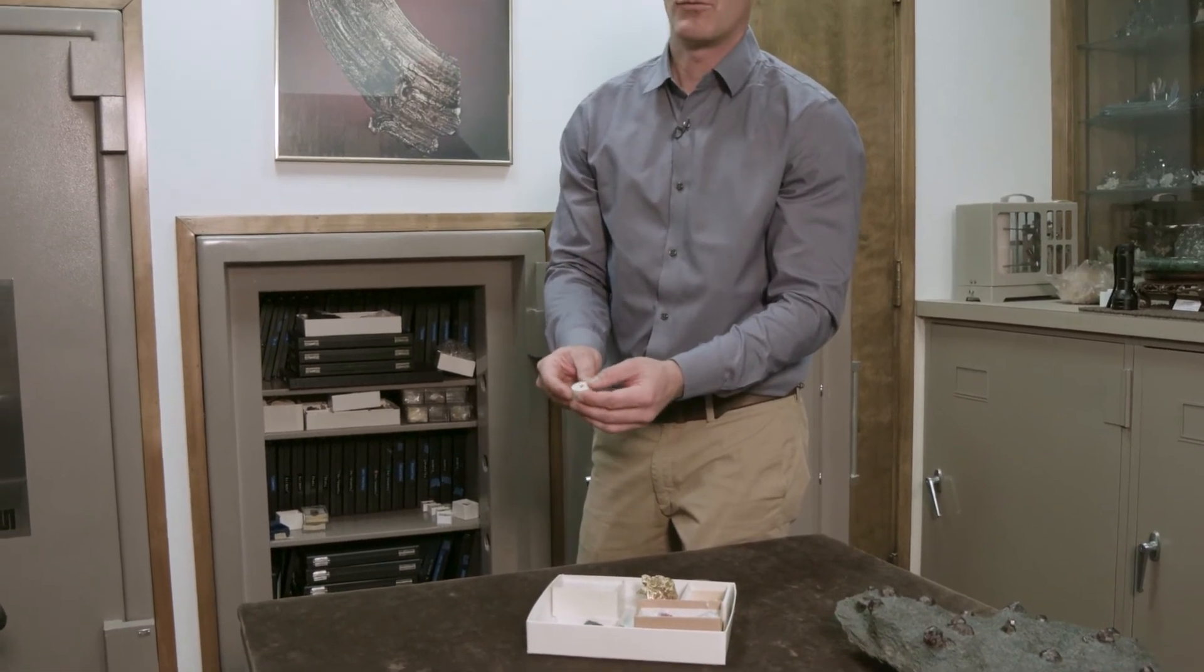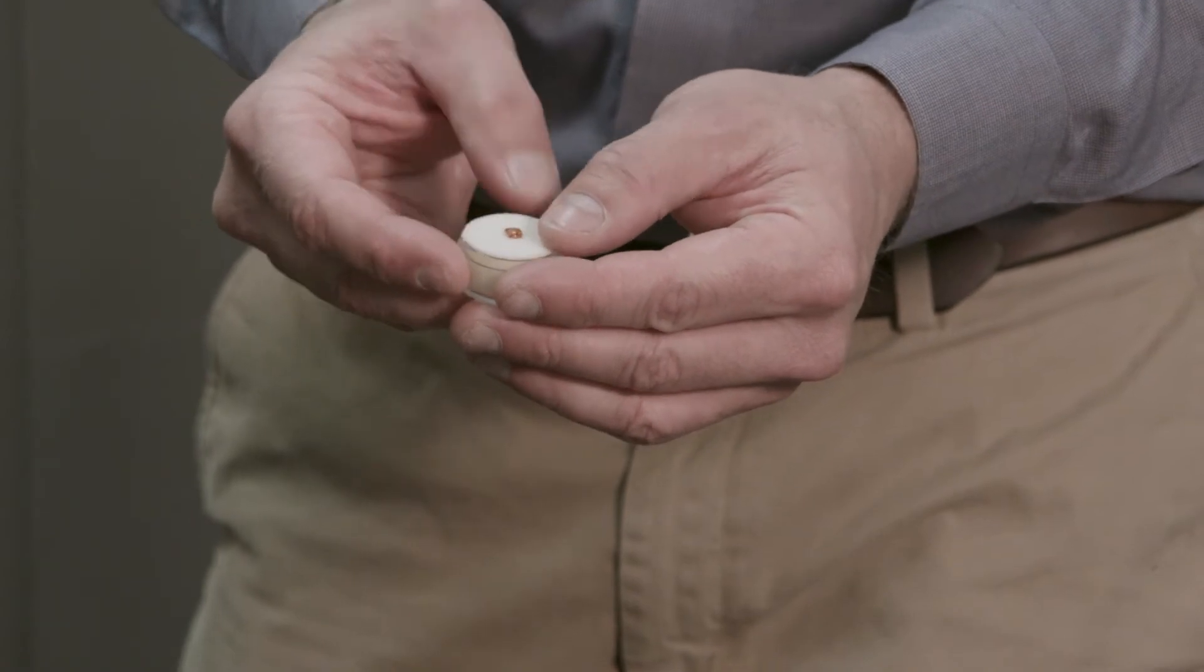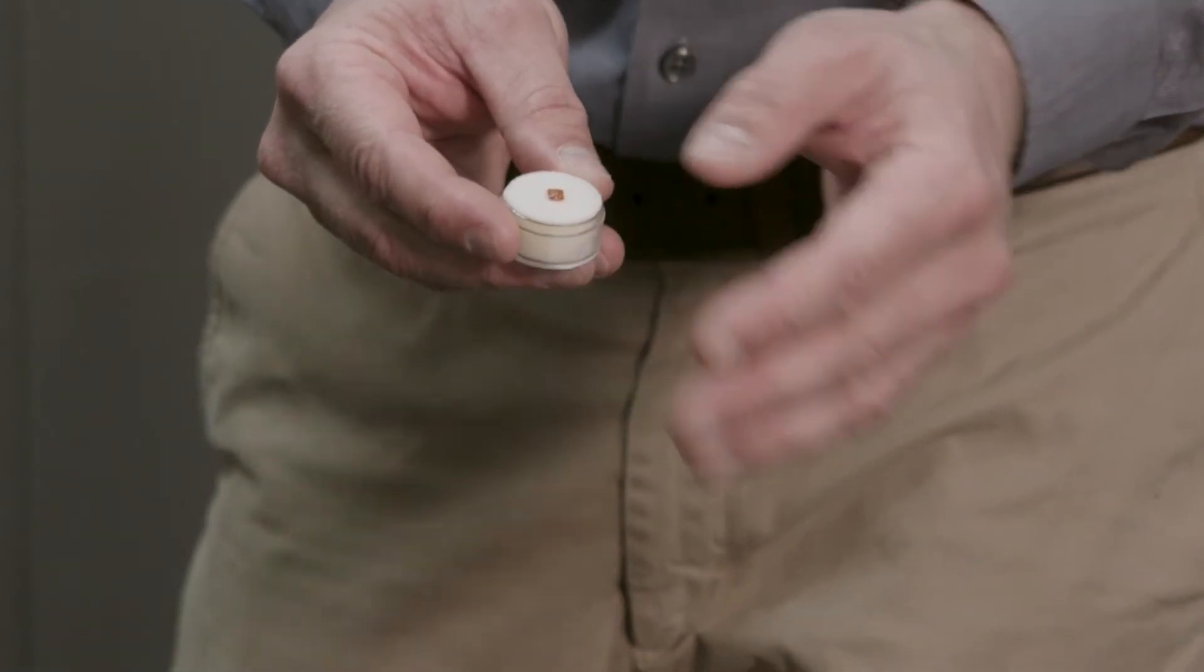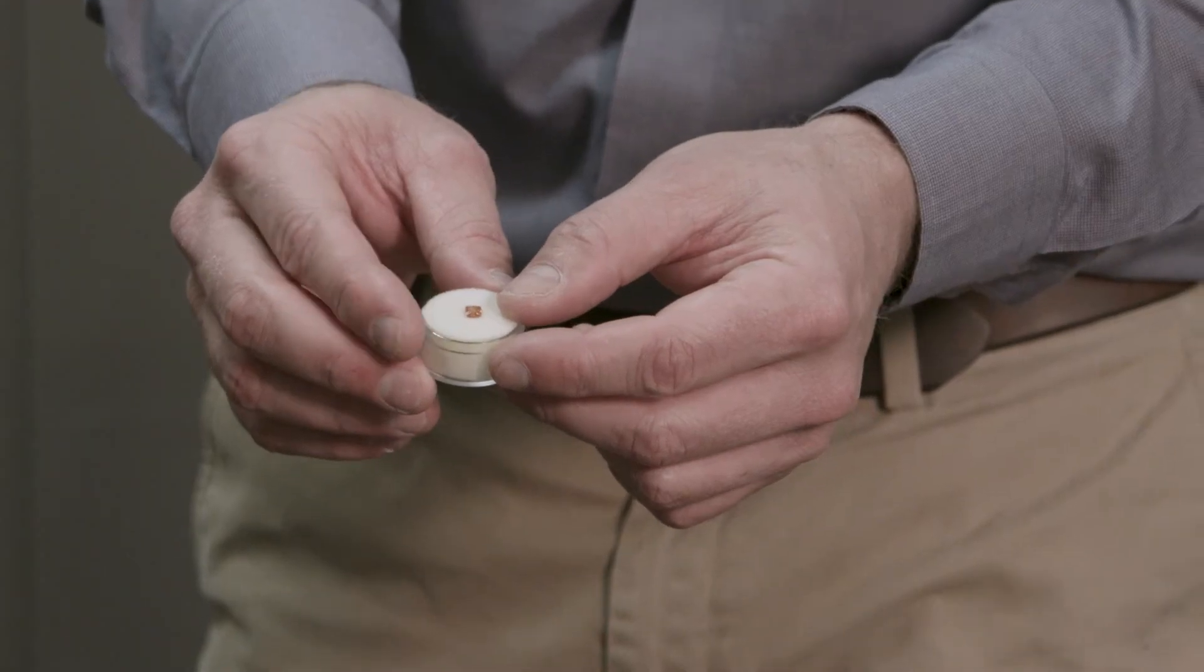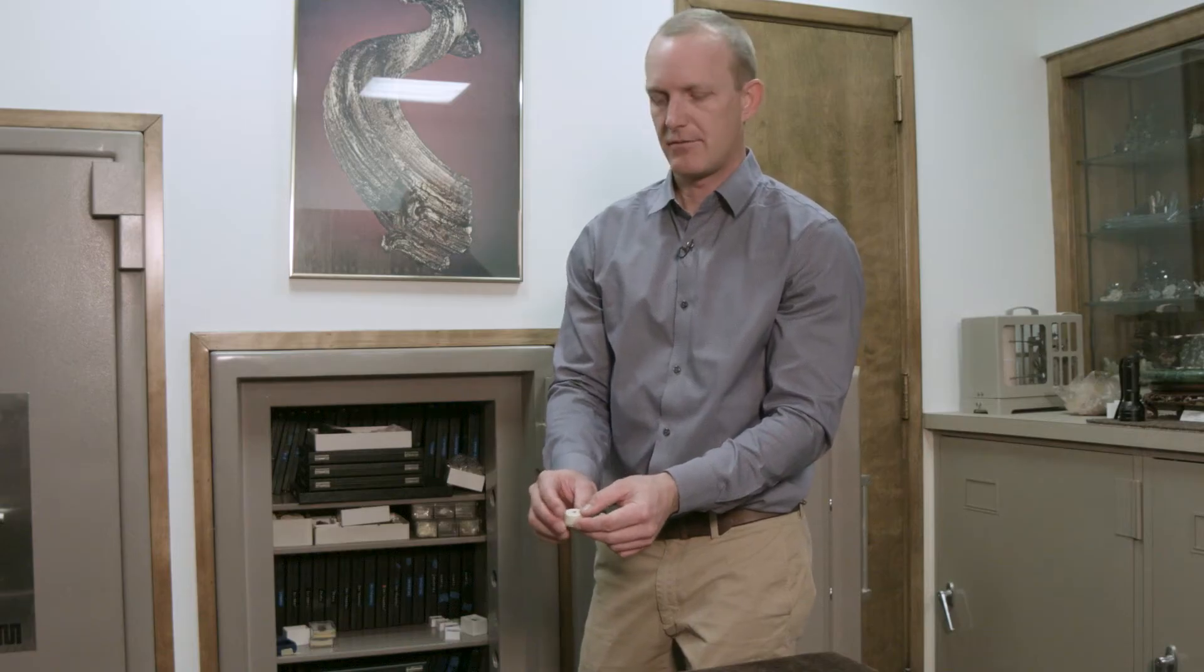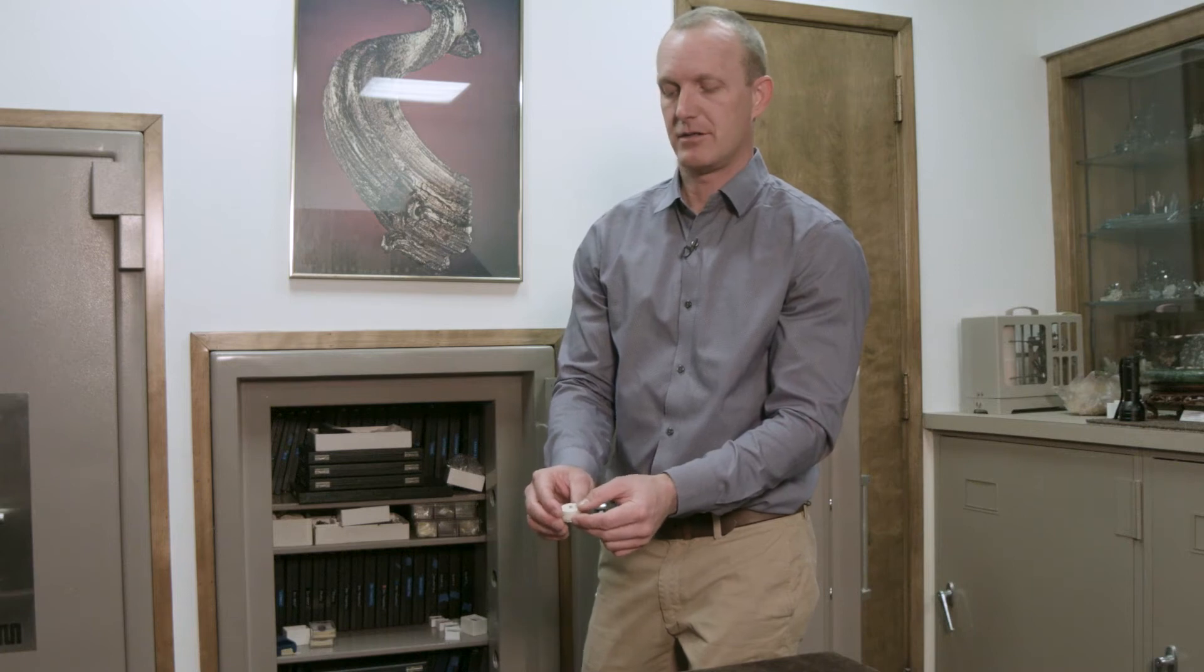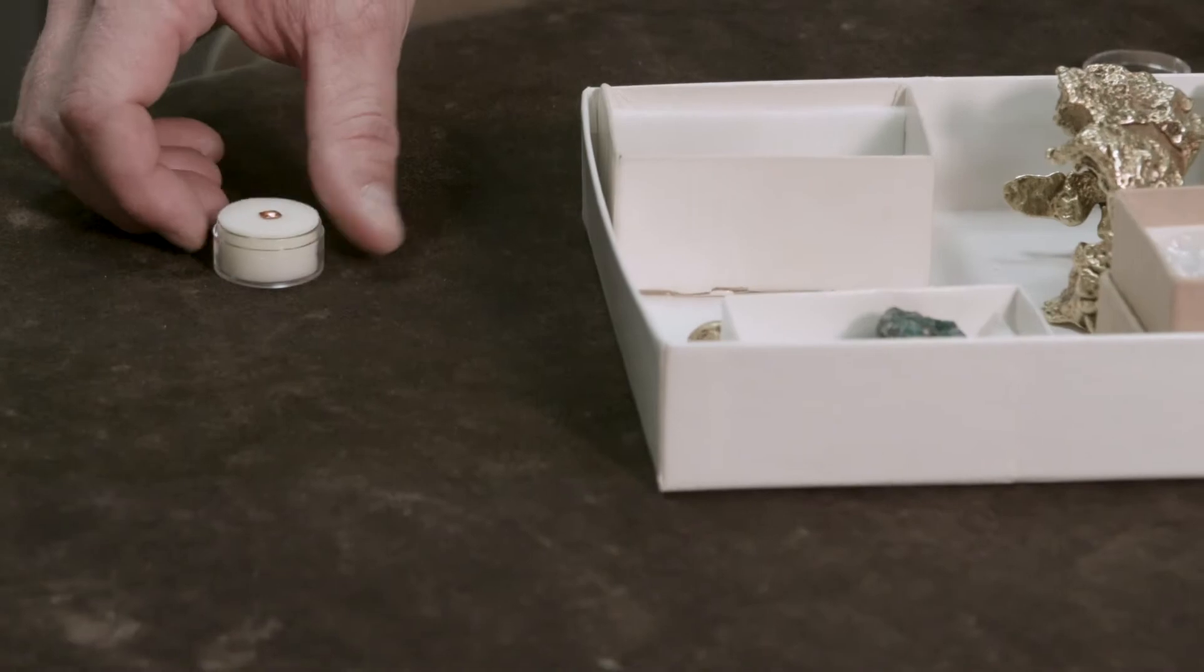This is the world's rarest gem. There is no other mineral of this material in existence anywhere outside these walls. It was found in Burma by a gemologist who mistakenly thought it was something else and eventually came here to the Natural History Museum for description and publication. It was donated because he thought it would be a great place for it to be on display.